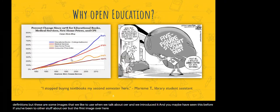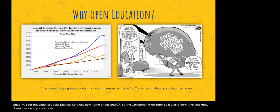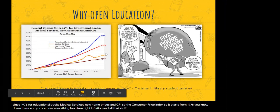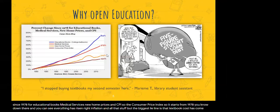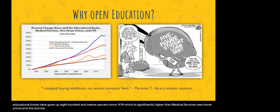The first image is a graph showing the percent change since 1978 for educational books, medical services, new home prices, and CPI — the consumer price index. Everything has risen due to inflation, but the biggest line is textbook cost. Educational books have gone up 812% since 1978, which is significantly higher than medical services, new home prices, and the consumer price index overall.